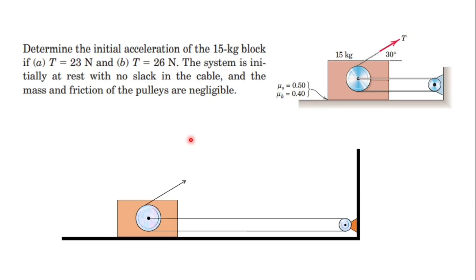In this video we'll see the force and acceleration relationship by evaluating a pulley system. The equation determines the initial accelerations of the 15 kg block for two cases: case A where tension is 23 newton, and case B where tension is 26 newton. The system is initially at rest with no slack in the cable, and the mass and friction of the pulleys are negligible.